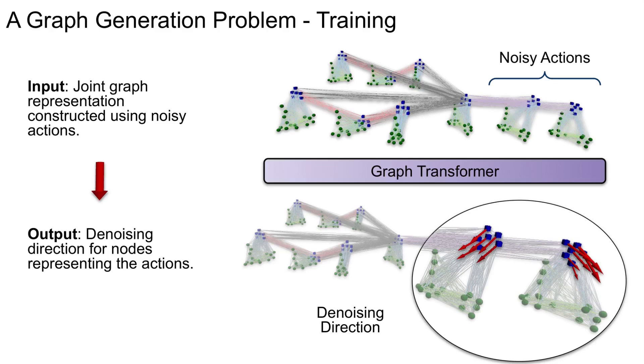During training, such a model receives a graph with noise added to the part of the graph representing the actions and learns to subtract it directly in the graph space.